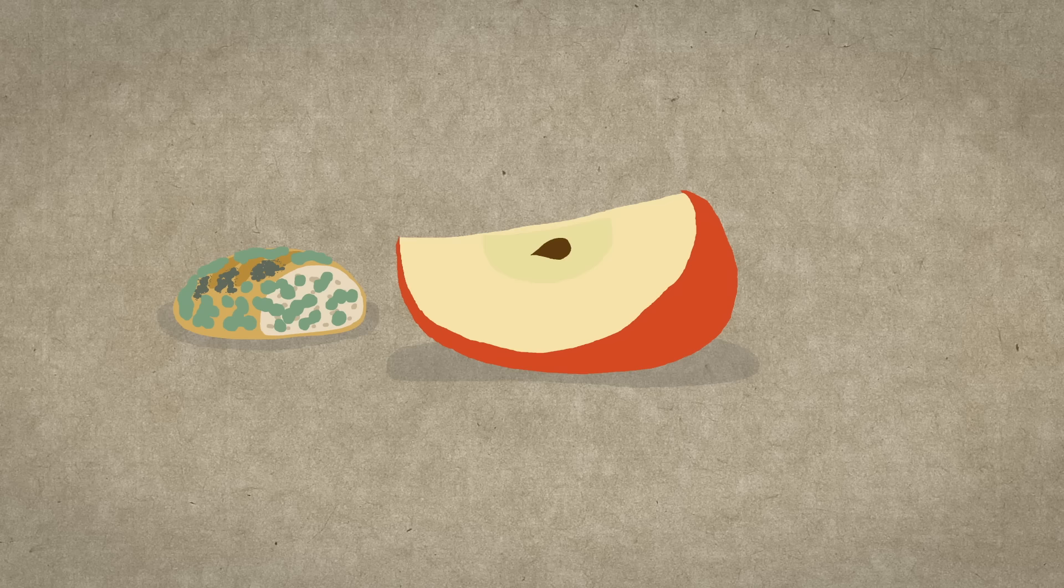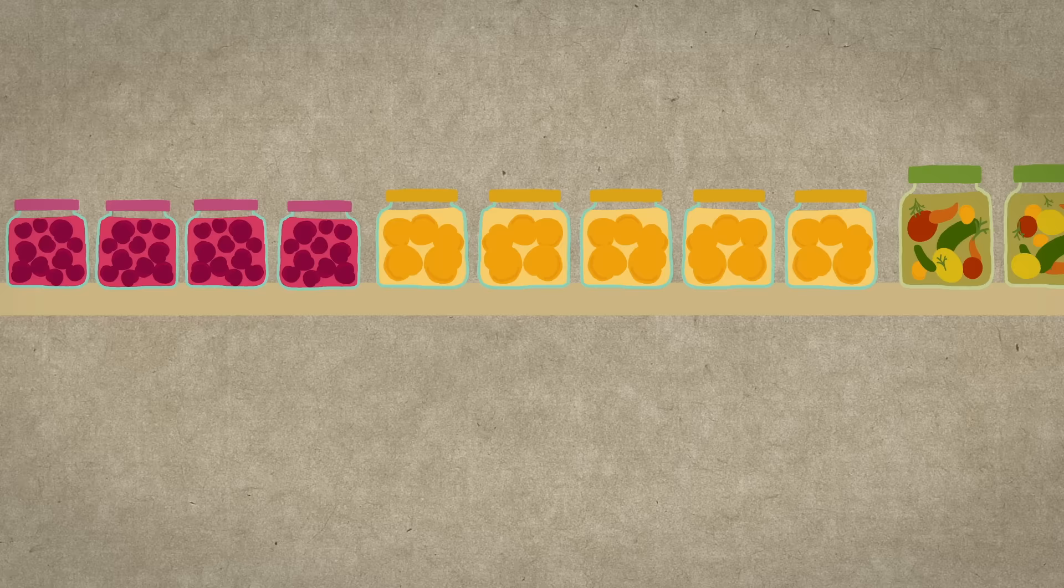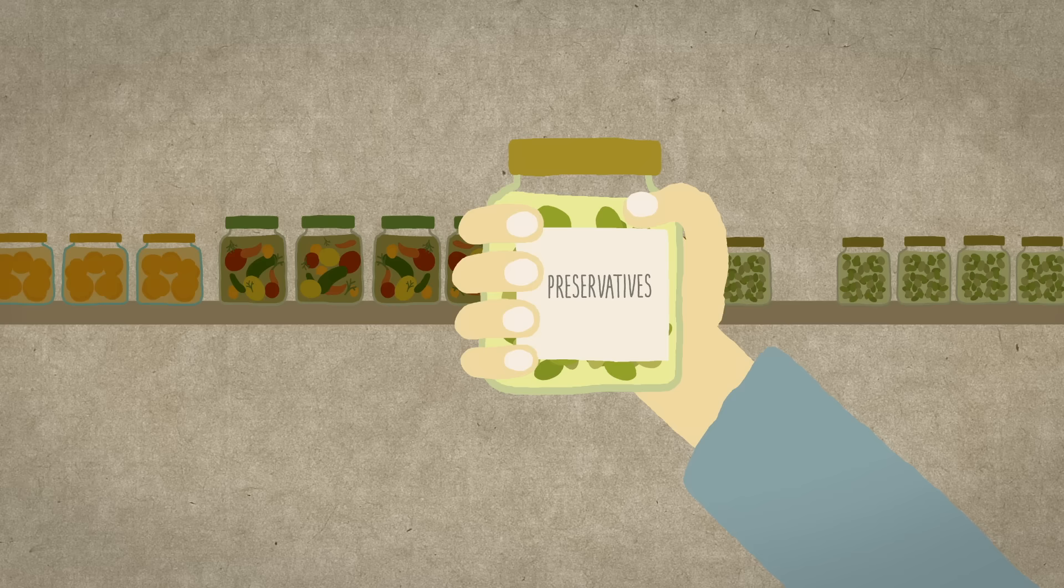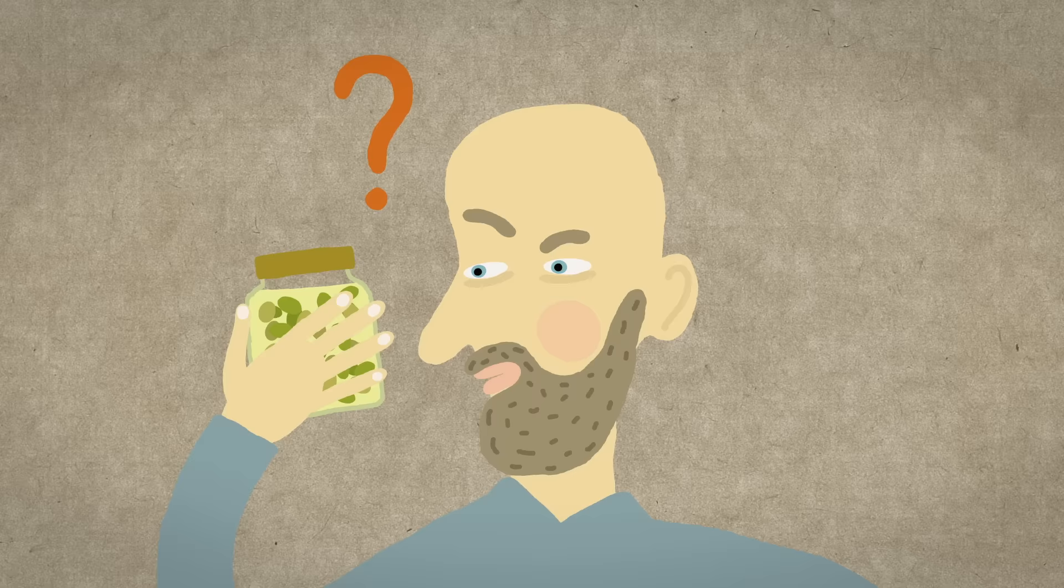Food doesn't last. In days, sometimes hours, bread goes moldy, apple slices turn brown, and bacteria multiply in mayonnaise. But you can find all of these foods out on the shelf at the grocery store, hopefully unspoiled, thanks to preservatives.